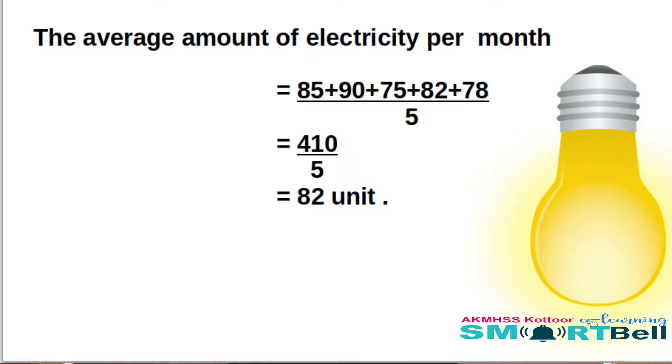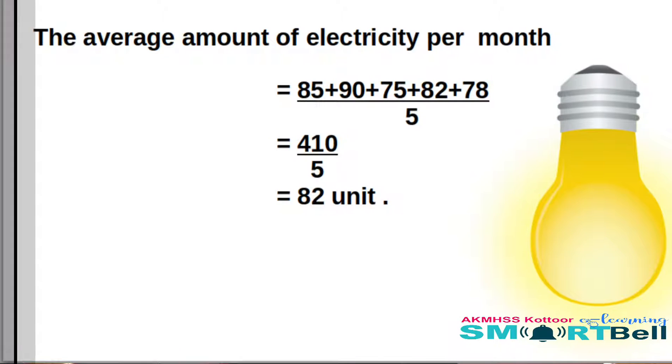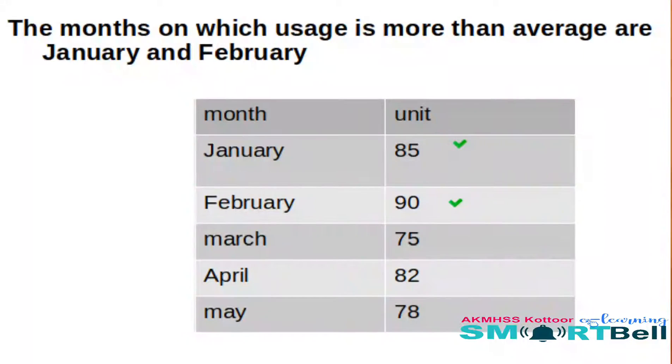We also want to see which months had usage more than the average. The average electricity usage is 82 units. The bill is 85 units in January — that is more than average. The bill is 90 in February — that is also more than average. But in March and May the bill is lower than average, and in April the bill is equal to the average. So the months with usage more than average are January and February.